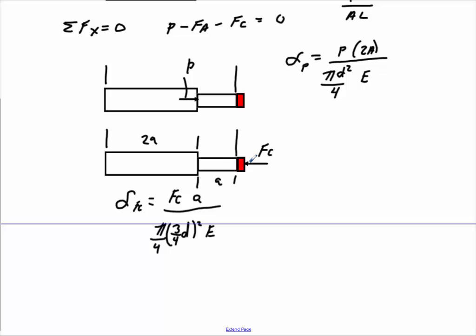So that's this deflection, but this FC is pushing down this whole thing. So we've got to consider here also plus FC times the length of two A over pi four times its diameter, which was d squared over four times E.